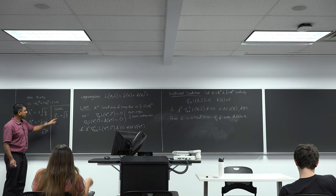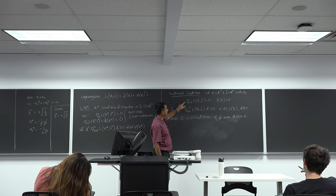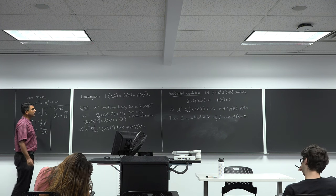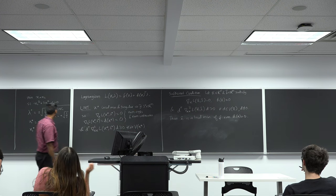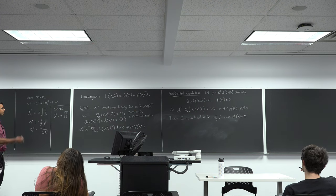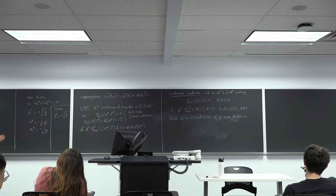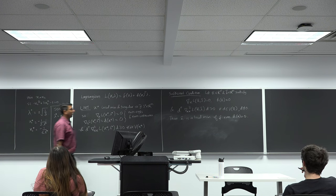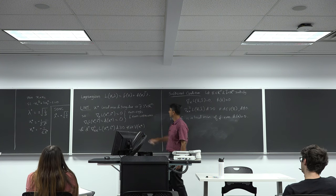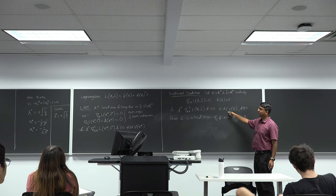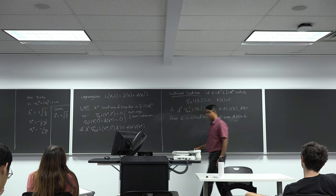Going back to this example: if I pick λ* equal to positive 1 over square root of 3, it satisfies the first order condition by design — that is how we found x-bar and λ-bar — but it also satisfies the sufficient condition. So x-bar is a strict local minimum of f over h(x) equals 0. That's the certificate that x* and λ* are indeed an optimal solution.